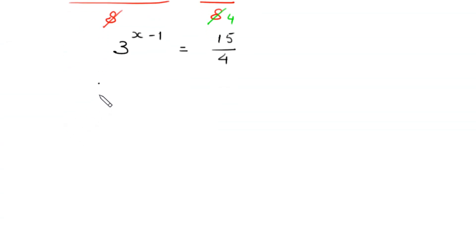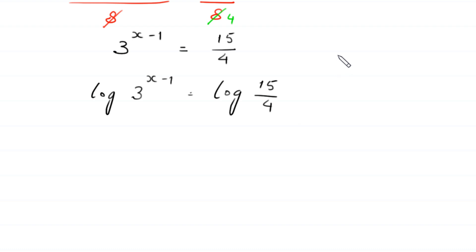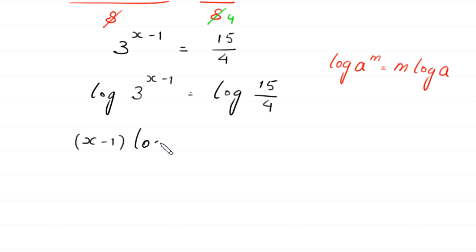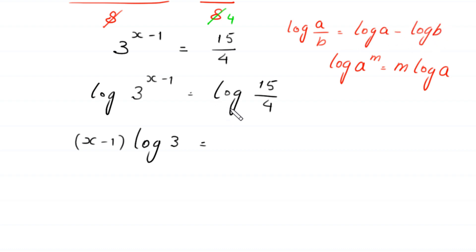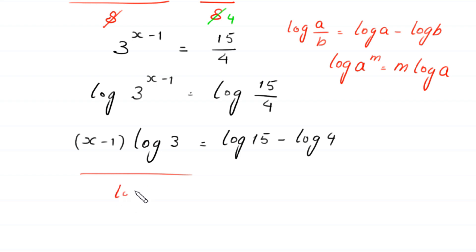Now from here we take the log of both sides. So, log of 3 to the power x minus 1 is equal to log of 15 over 4. By using the log power rule — log of a to the power m equals m times log a — the left side becomes x minus 1 times log 3. Then we divide both sides of this equation by log 3.